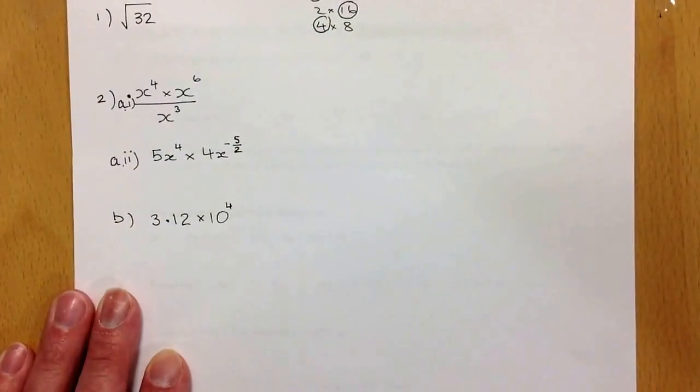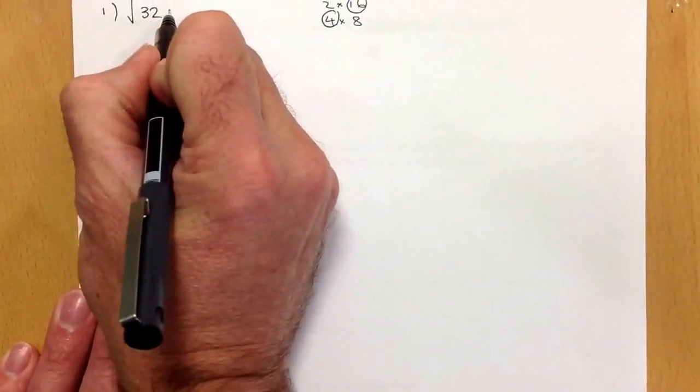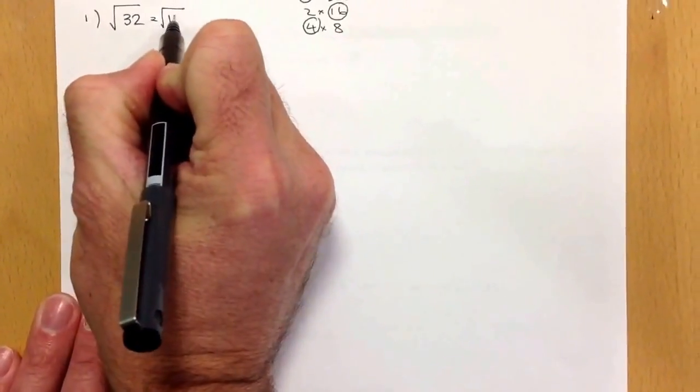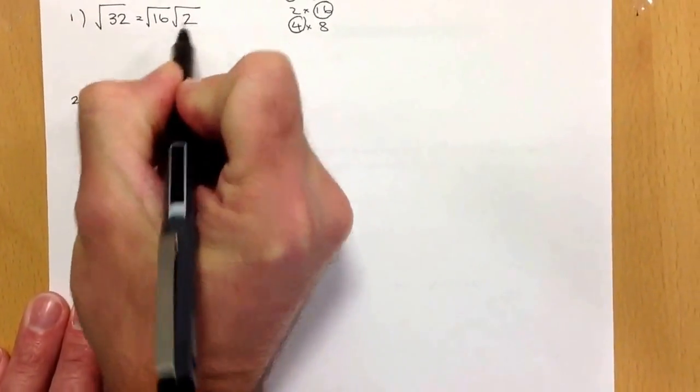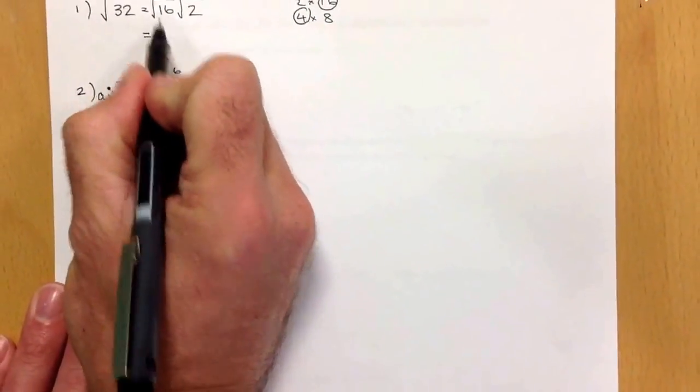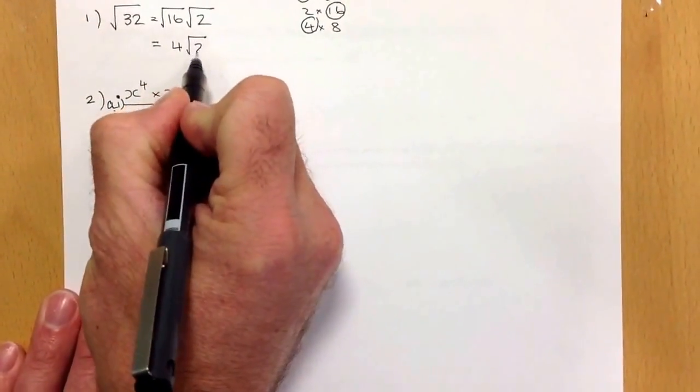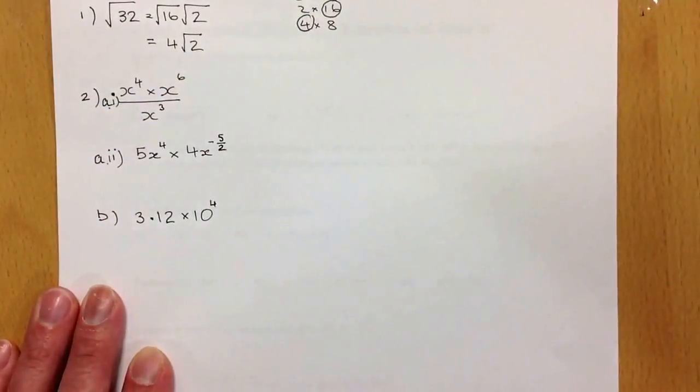So I'm going to use the highest square number, which is 16, and I'm going to pair that up with 2. So my first part of the question will give me root 16 and root 2. Then I'm going to simplify that down further. Root 16 will give me 4 root 2, and 4 root 2 will be my final answer.